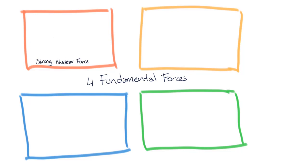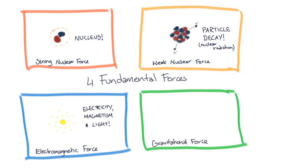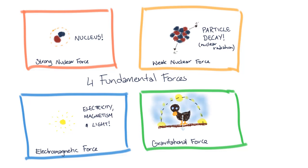The strong nuclear force stitches nucleons together, which means we get nuclei. The weak nuclear force affects nuclear decay, which gives us nuclear radiation. The electromagnetic force governs charge and magnetic fields, which means we get atoms. And finally, the gravitational force keeps large chunks of matter clumped together, giving us planets and stars, and gravity.